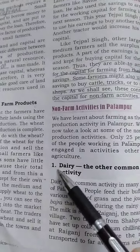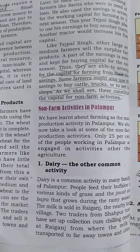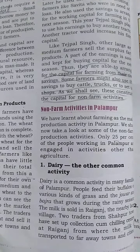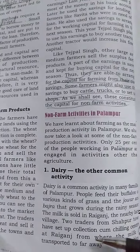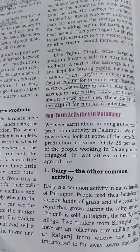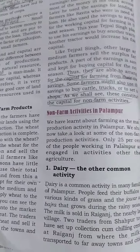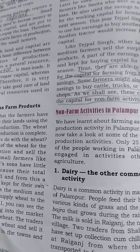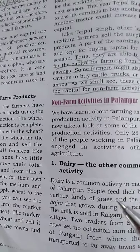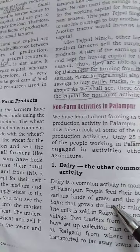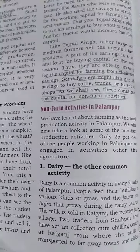The very first non-farming activity discussed was dairy. People feed their buffaloes with jowar, bajara, and grass, and they sell the milk in Rai Ganj. Dairy is the most common activity in any village because people generally keep buffaloes and cows.